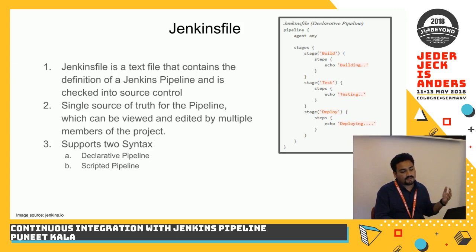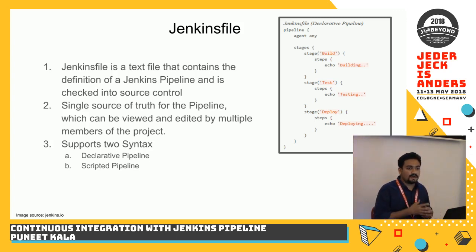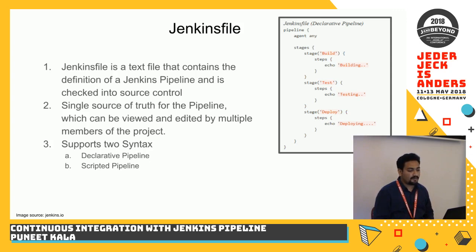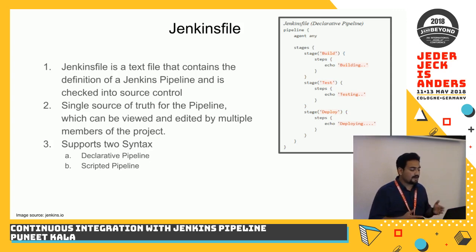Typically it would have a test stage, and then once you know everything is working and the build is stable, you would have a deploy stage — and that would be the complete pipeline. The syntax that Jenkinsfiles support is a declarative pipeline and a scripted pipeline. My session is more focused on declarative, but you can also use scripted pipeline syntax if you want.